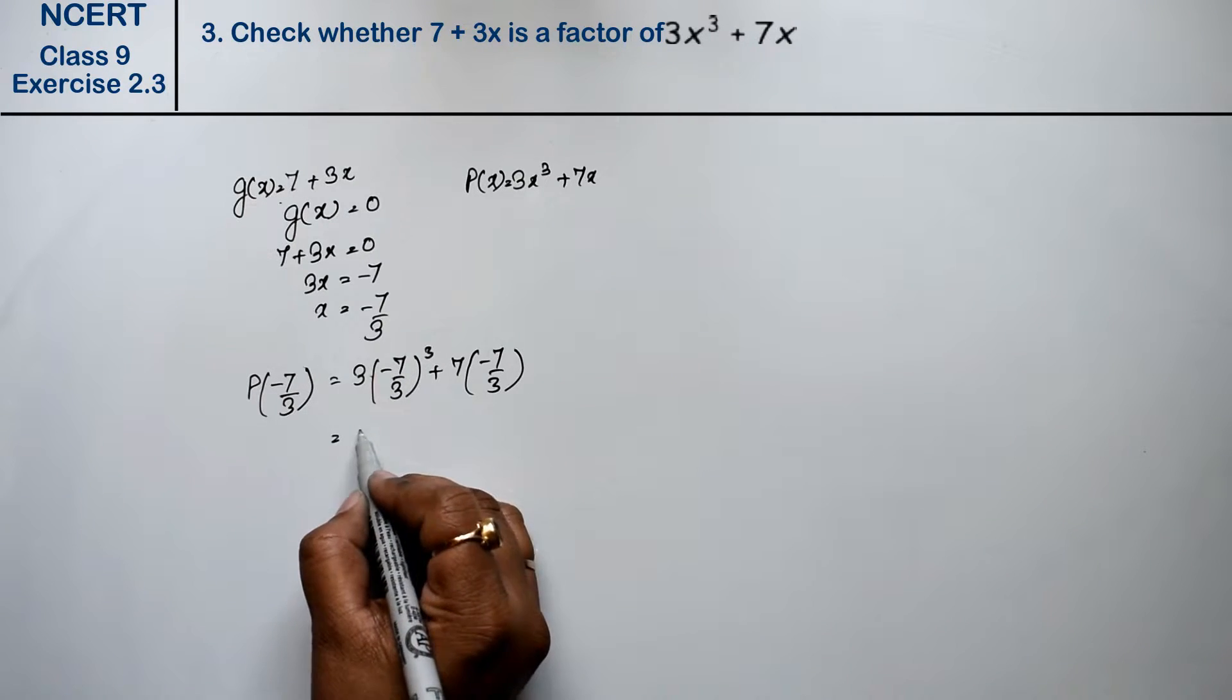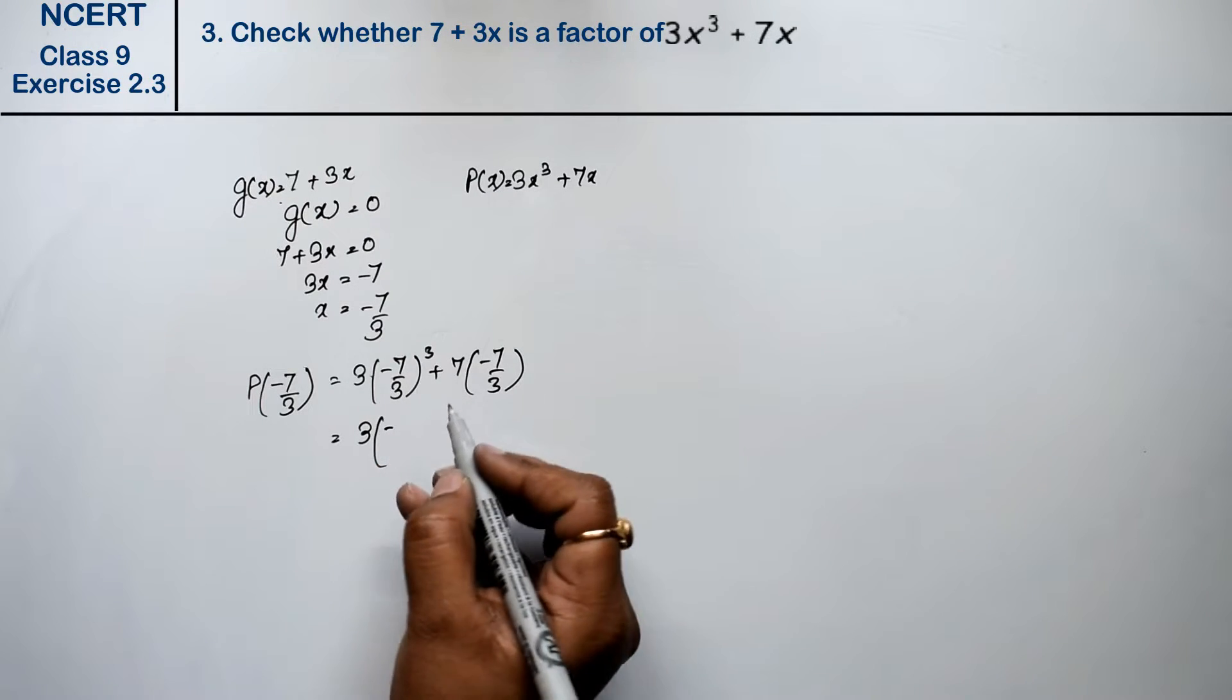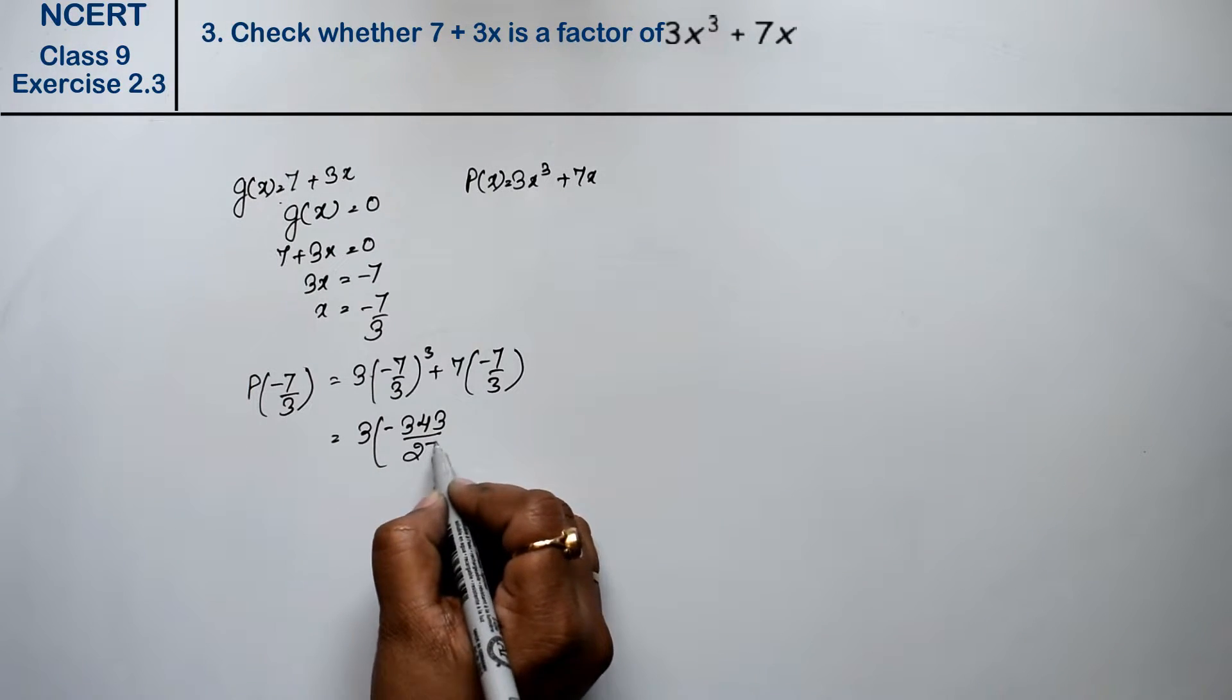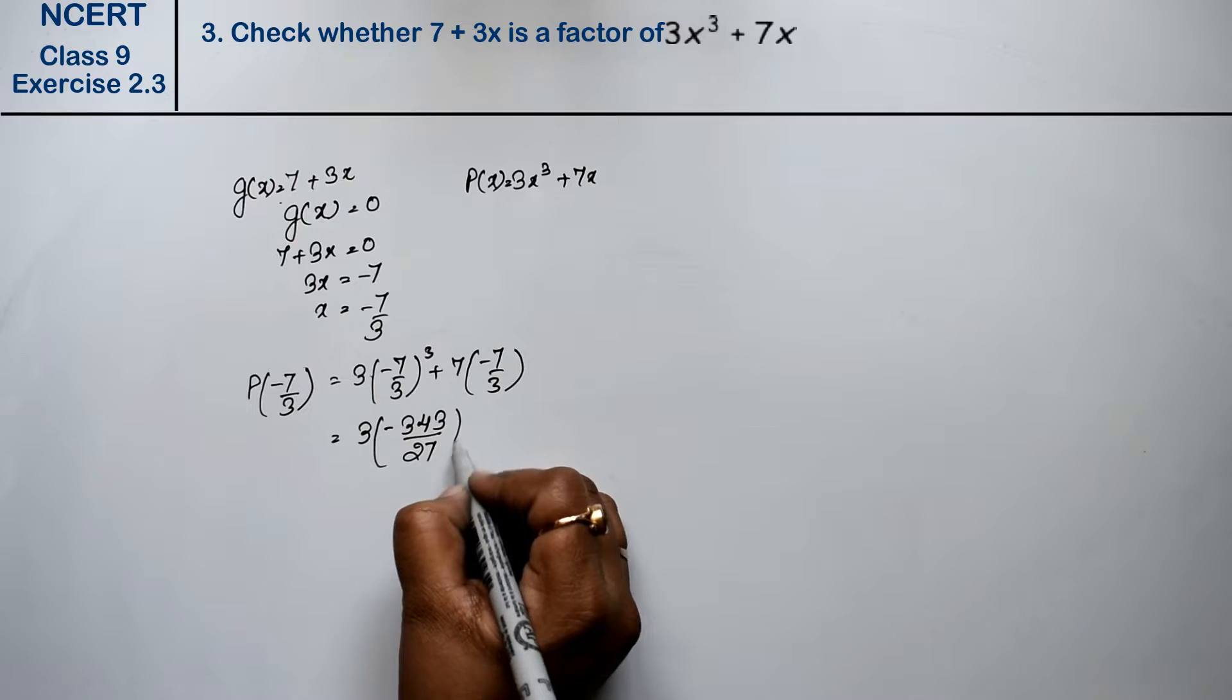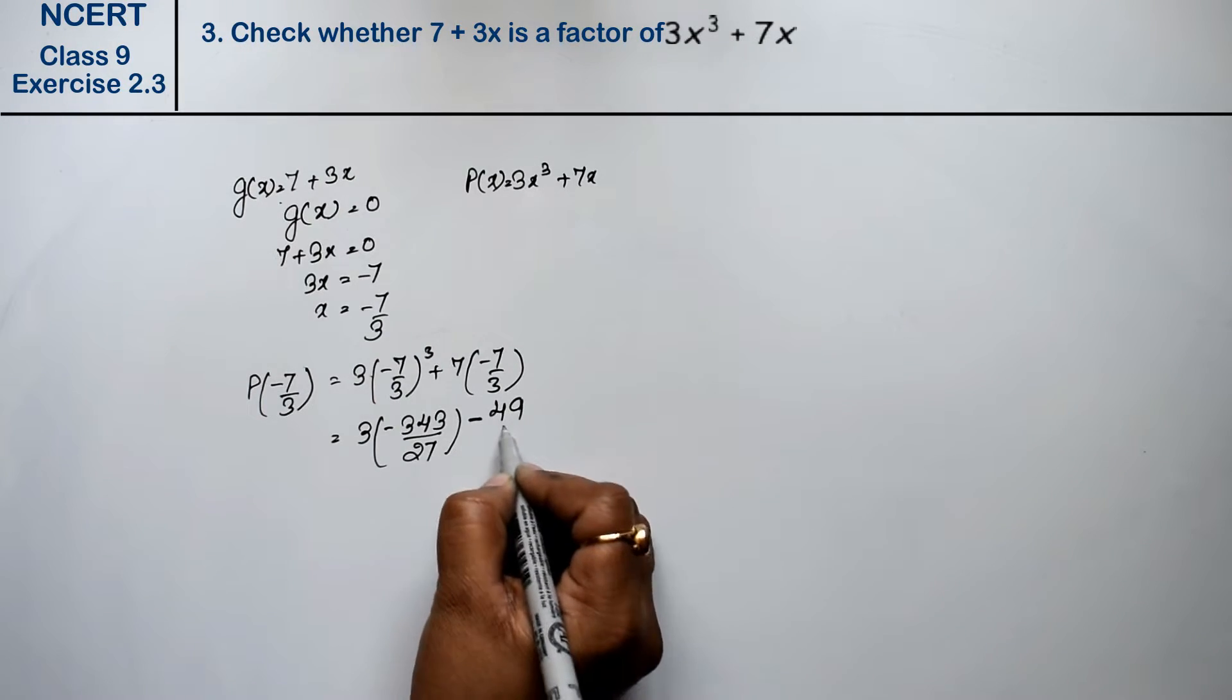See, the power is odd so negative will remain. 3 into minus, 7 sevens are 49 into 7 is 343. 3 threes are 9, 9 threes are 27. Plus minus minus, 7 sevens are 49 upon 3.